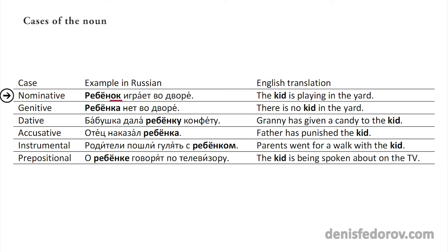Nominative case: ребёнок играет во дворе — the kid is playing in the yard. Genitive case: ребёнка нет во дворе — there is no kid in the yard.